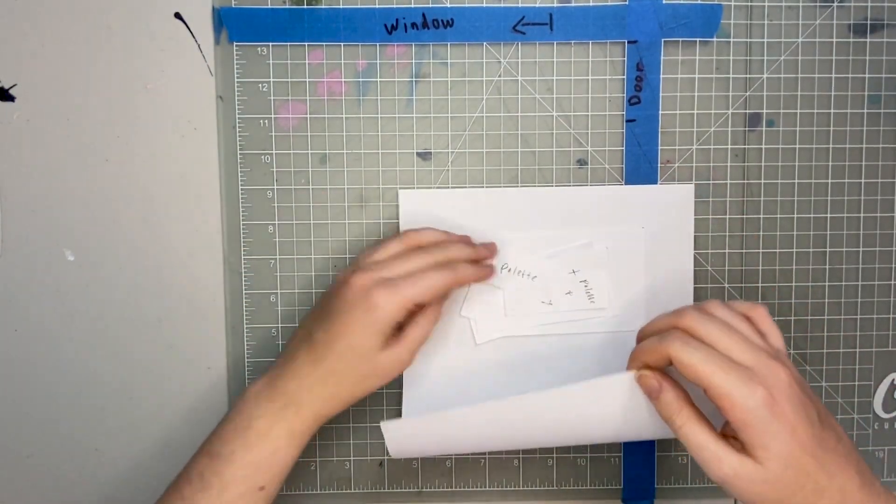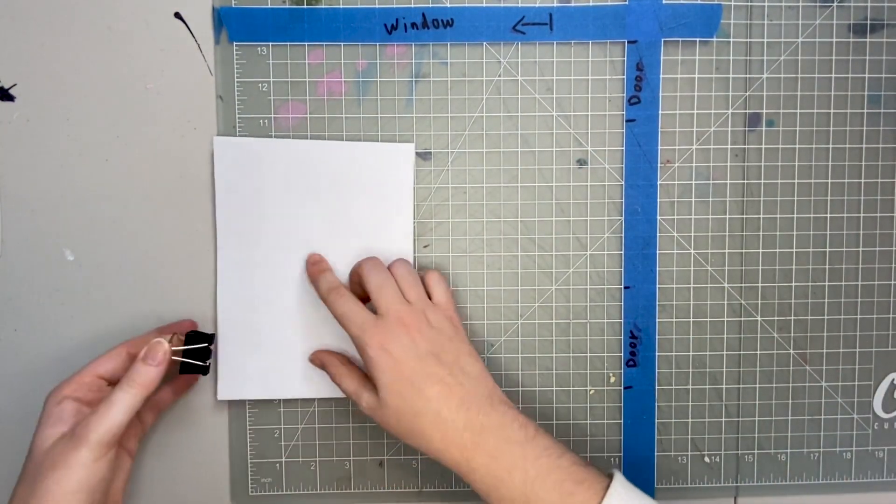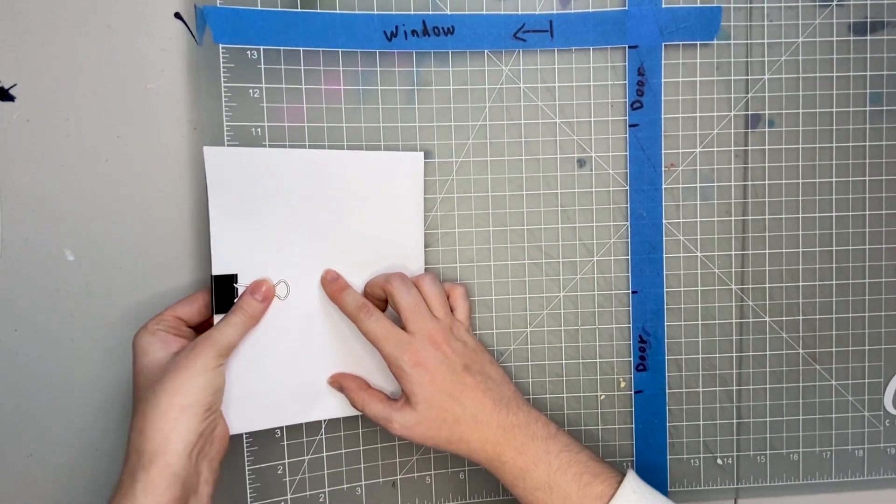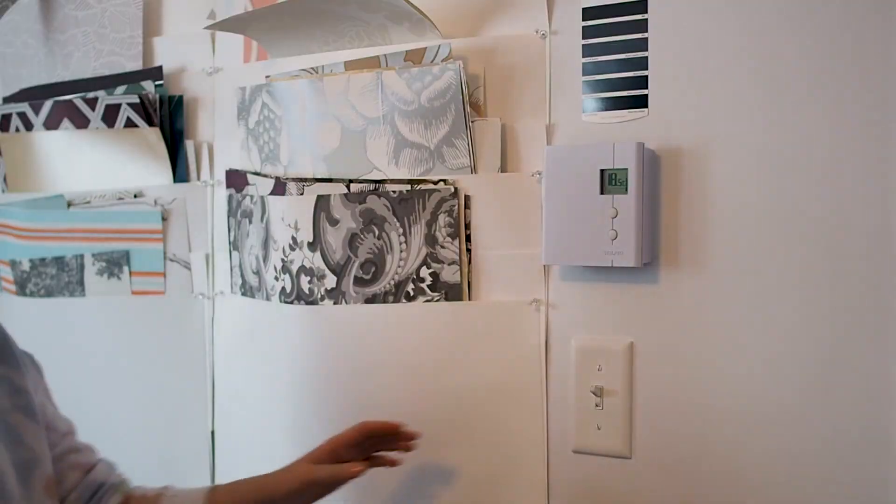Sometimes when I feel the urge to move things around, I'll just take these pieces and rearrange them to see if it works. It's nice to be able to play with this little map whenever I have a new idea for a studio arrangement so I can try it out before I move everything around. Although sometimes I'll end up moving the furniture anyway.